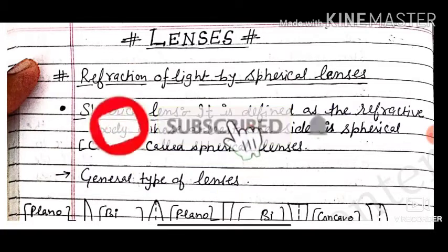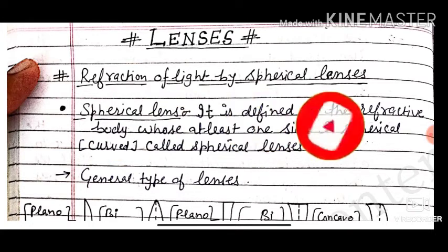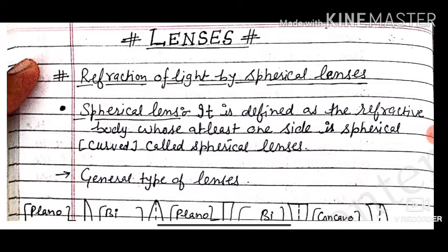Hello dear students, how are you? First of all, welcome to my channel ScienceWala. Today we are taking Class 10th Physics, Optics Part 7. In this part we will discuss types of lenses and the different ray diagrams at different positions when the object is kept to form the image at distant places by convex lenses and concave lenses. So let's begin the lecture.